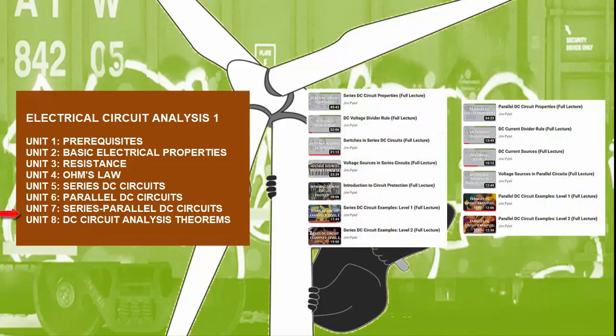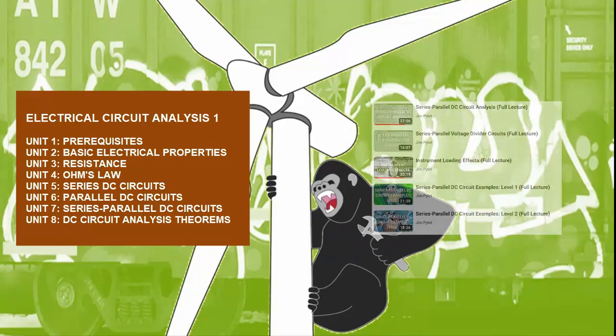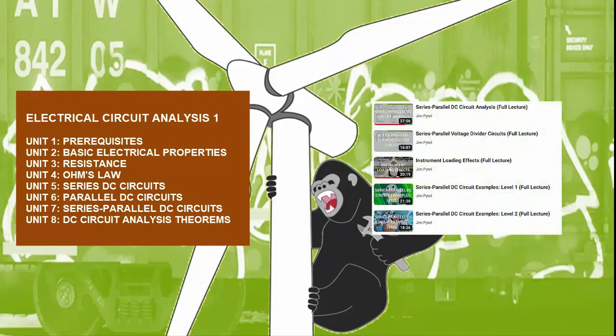Following this unit, we examine the fundamental properties of both series and parallel DC circuits, cover important concepts like Kirchhoff's voltage law and Kirchhoff's current law, and introduce handy shortcuts like the voltage divider and the current divider rule. The next unit examines more complicated series-parallel circuits using a direct, understandable approach, building off the previous understanding of basic series and basic parallel circuits.